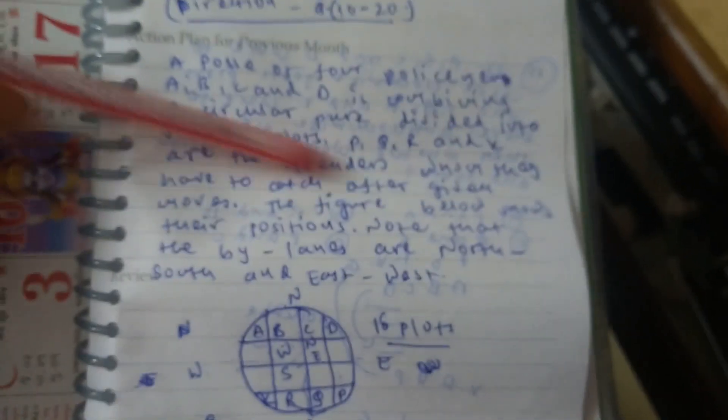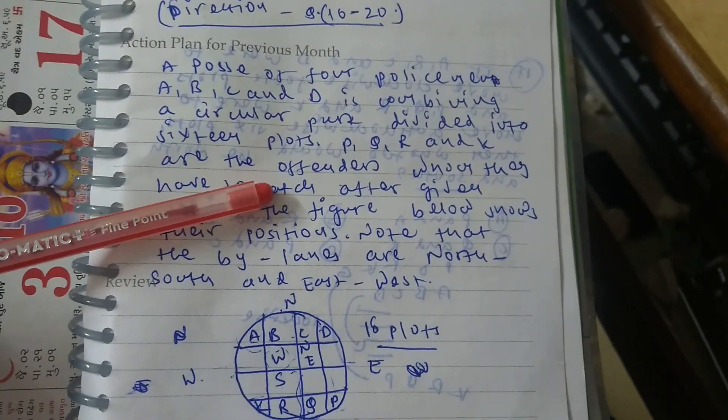Here circular park is given which has 16 plots. P, Q, R and K are offenders whom they have to catch.